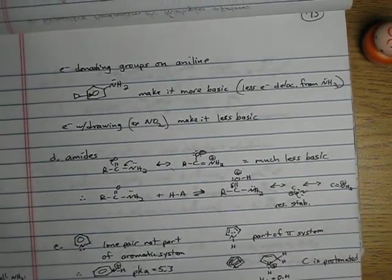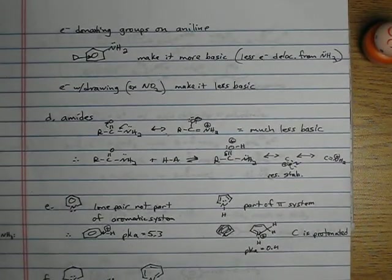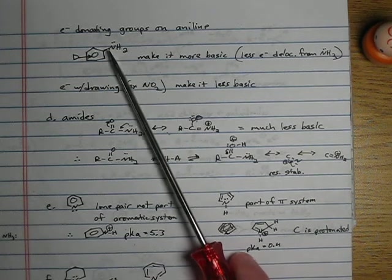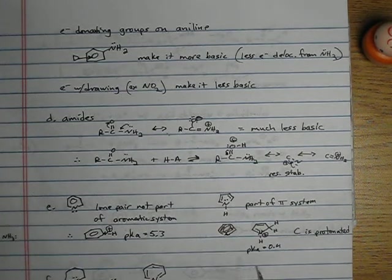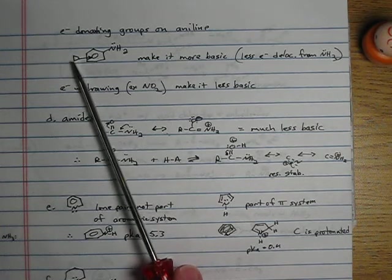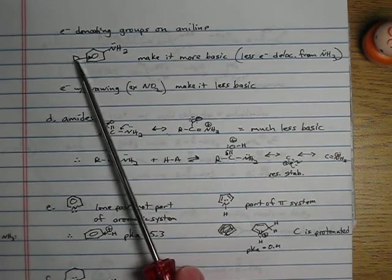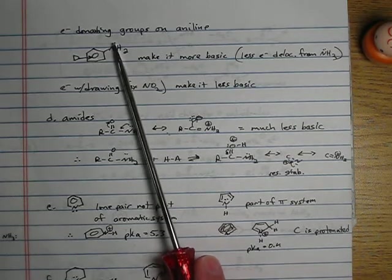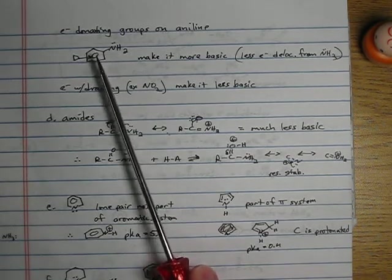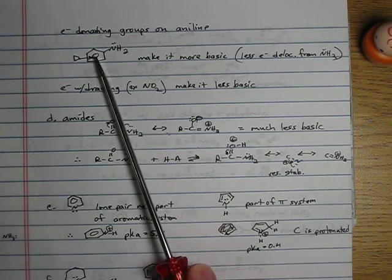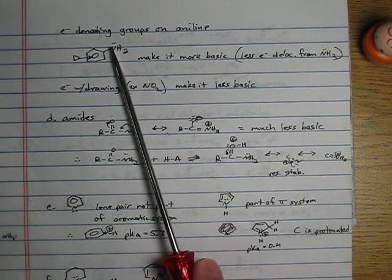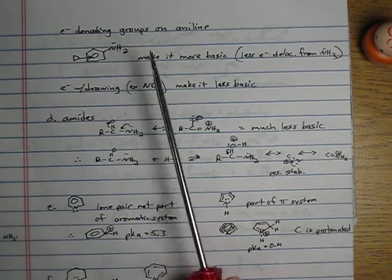What do electron donating and electron withdrawing groups do to that lone pair on the nitrogen of aniline? Well, one could expect that if you've got an electron donating group, if you're donating electron density to this ring, and these two electrons are delocalized a bit into the ring, that the more electron density in the ring, the more electron density can get delocalized to this nitrogen. That would make them more basic.